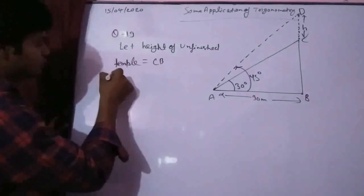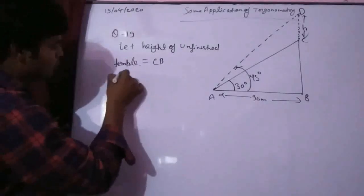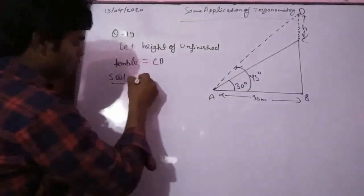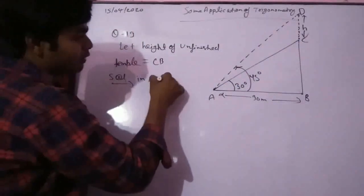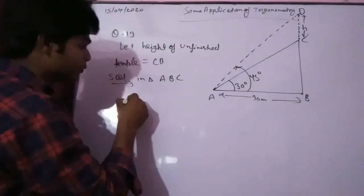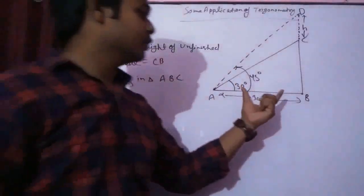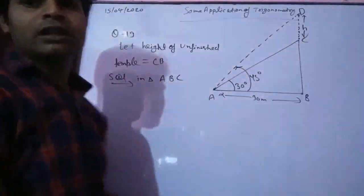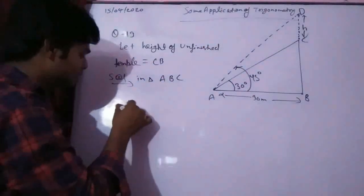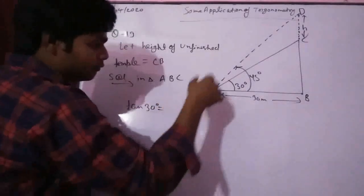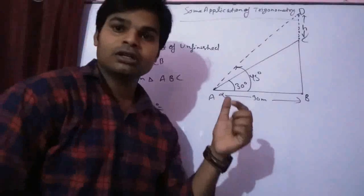In triangle ABC, AB is the base and BC is the perpendicular. Then we apply tan 30 degrees. The tan theta formula is tan theta equals perpendicular upon base.